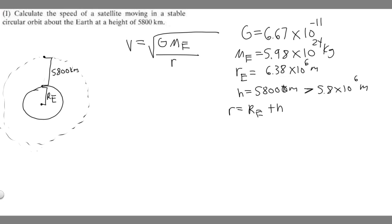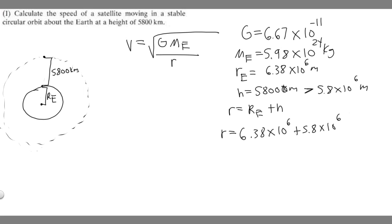Now all we have to do is add them up. Whenever you add numbers in scientific notation, you generally want their exponents to be the same — it makes it a lot easier. We have the radius of the Earth, 6.38 times 10 to the 6th, plus the height, 5.8 times 10 to the 6th. Adding those gives us 12.18 times 10 to the 6th meters. So this is going to be our total radius.